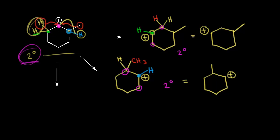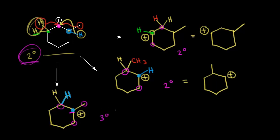So this hydrogen and these two electrons are going to move over to the carbon in magenta. We have our ring and the methyl group stays there. The hydrogen in blue moves over, and there was already a hydrogen on that carbon. We took a bond away from the carbon in blue, so that is where our carbocation is — a plus one formal charge. The carbon in blue is directly bonded to one, two, three other carbons, so this is a tertiary carbocation, which is more stable than a secondary carbocation.